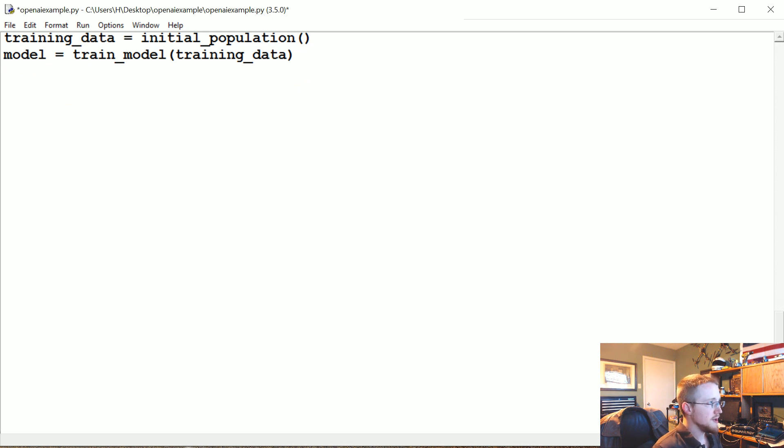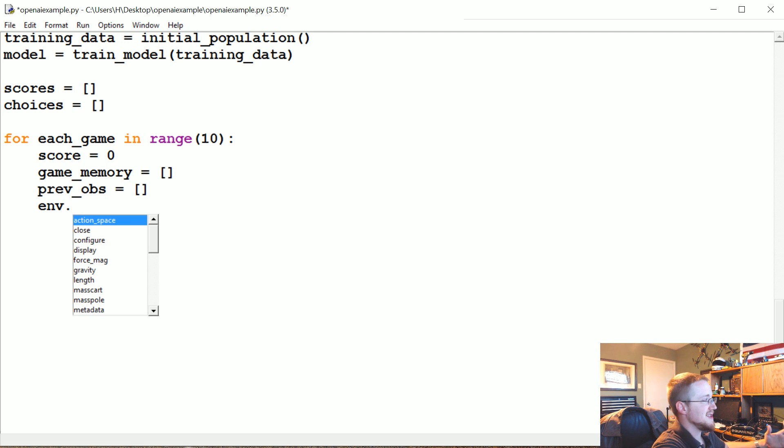So now what we're going to do is let's just run through this thing. We're going to say scores equals empty list, choices equals an empty list. For each game that we want to play in range, let's do 10. We're going to actually visualize these games. We're going to say score equals 0, game memory empty list, prev_obs empty list. This is pretty similar to the thing we wrote before. We're just going to say env.reset.